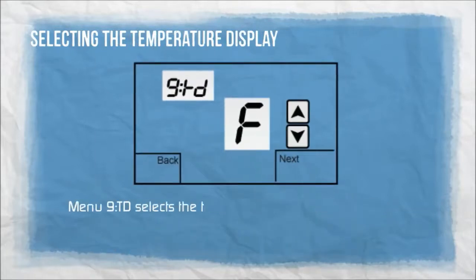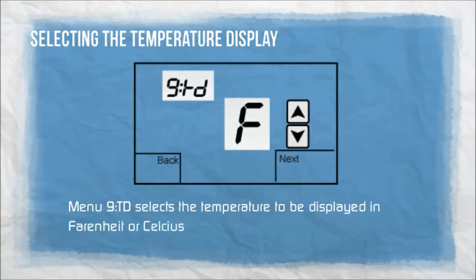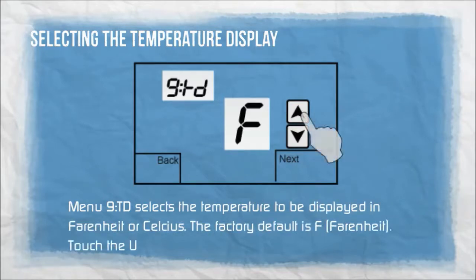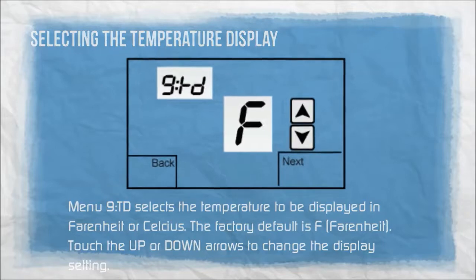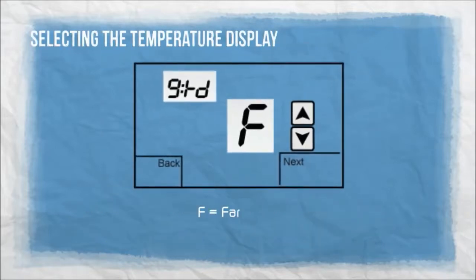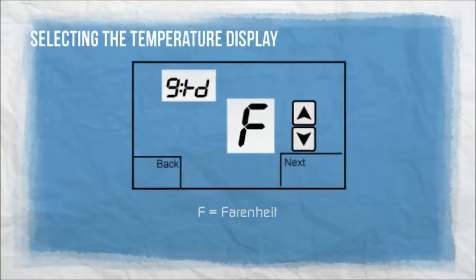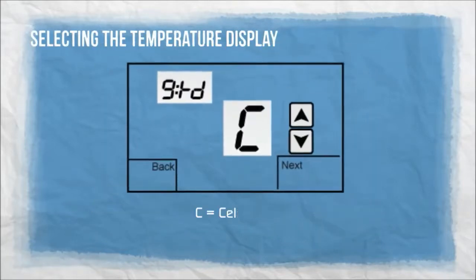Menu 9TD selects the temperature to be displayed in Fahrenheit or Celsius. The factory default is F for Fahrenheit. Touch the up or down arrows to change the display setting. F: Fahrenheit. C: Celsius.